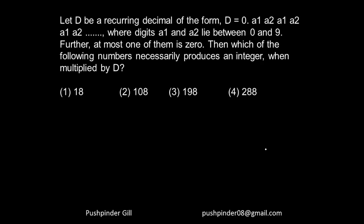So as we know that you have time constraints in the CAT test or in the GMAT test or in whichever test you're going through, so let's see this question. If you watched the percentage video, you must be knowing that 1 by 11 is nothing but 0.090909 and so on.